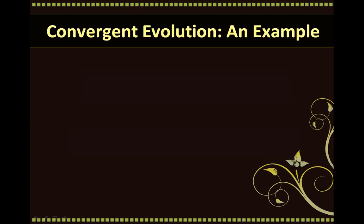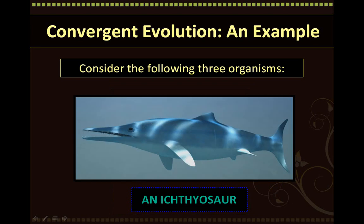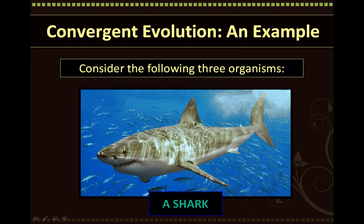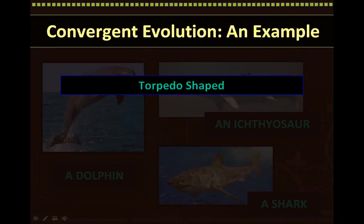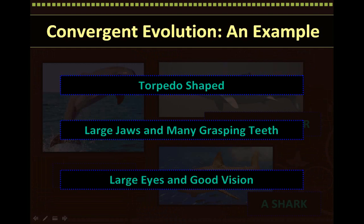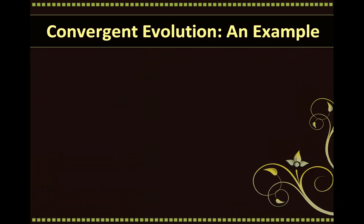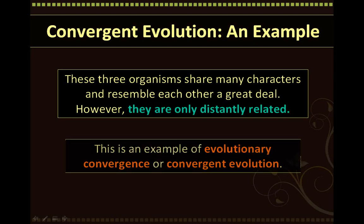Let's discuss a real-life example of convergent evolution and consider the following three organisms: a dolphin, which is a mammal; an ichthyosaur, which is a reptile; and a shark, which is a fish. When looking at all three of these organisms and considering their similarities, we realize that all of them are torpedo-shaped for rapid swimming, they all have large jaws and many grasping teeth for handling prey, and they all have large eyes and good vision because they are visual predators. We see that these organisms share many characters and resemble each other a great deal. However, they are only distantly related. This is an example of evolutionary convergence or convergent evolution.